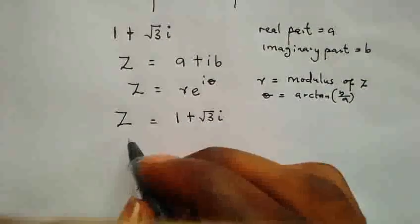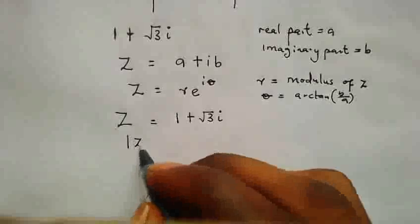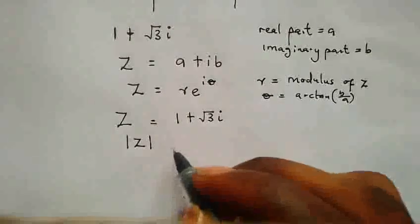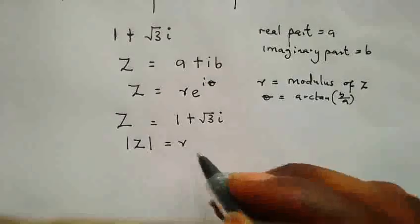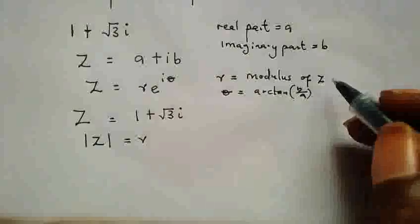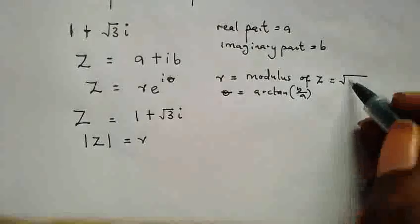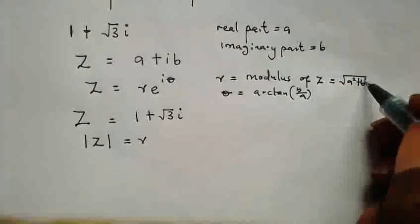So here we know that the modulus of Z, so the modulus can also be written like this, this is equal to R. Well, this is computed as the square root of A squared plus B squared.